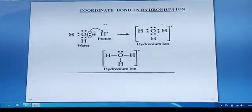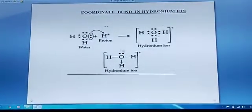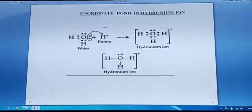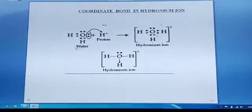Let's start with an example. This is a hydronium ion. Let me explain how the structure of this hydronium ion is made. Now see, it's water. This is the electron dot structure of water.